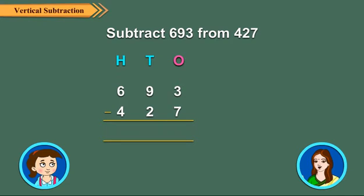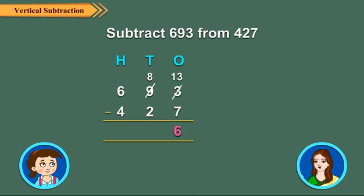Subtract the 1's. 3 is less than 7, so regroup 9 10's and 3 1's as 8 10's and 13 1's. So, 13 minus 7 is equal to 6. Write 6 under 1's column.